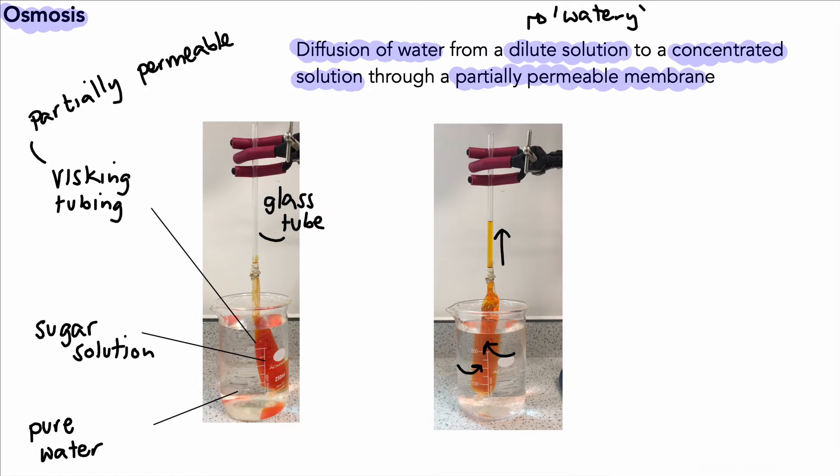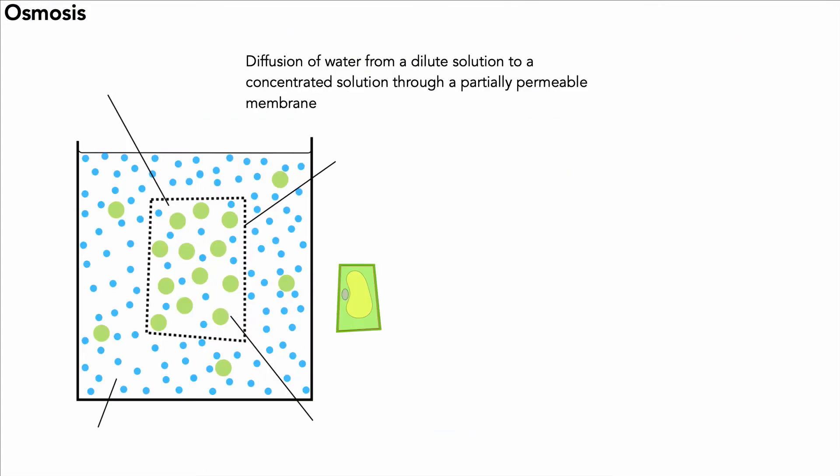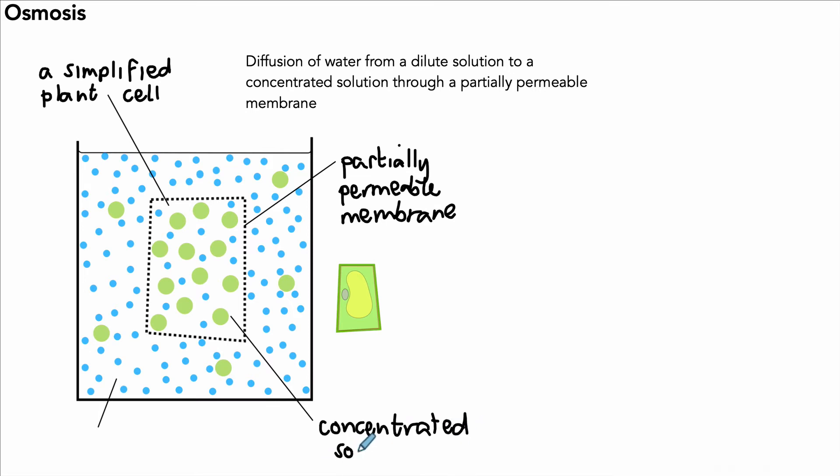So this is the idea of osmosis. Let's take a look at another example. In this example here I've got a very simplified diagram of a plant cell. You can see in the diagram next to this one a more detailed version of a plant cell. This is surrounded by a partially permeable membrane. I haven't drawn the cell wall in the simplified plant cell, but I've just drawn the partially permeable membrane surrounding that cell. Inside the cell we've got a concentrated solution in comparison to the outside, and you can tell that because of the green solute particles compared to the blue water particles inside the cell.